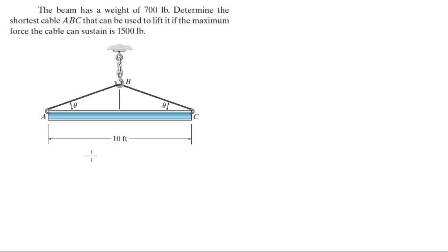Alright guys, now we're going to do this problem which says the beam has a weight of 700 pounds. Determine the shortest cable ABC that can be used to lift it if the maximum force the cable can sustain is 1,500 pounds.